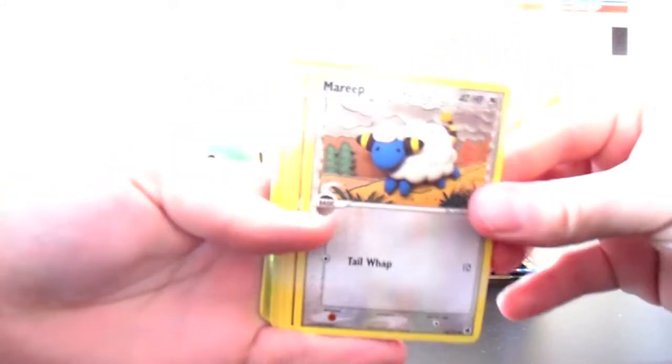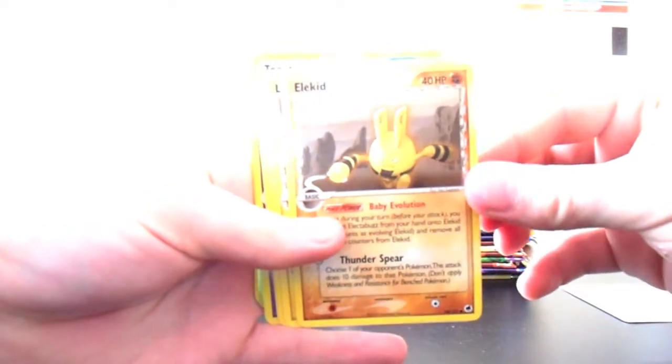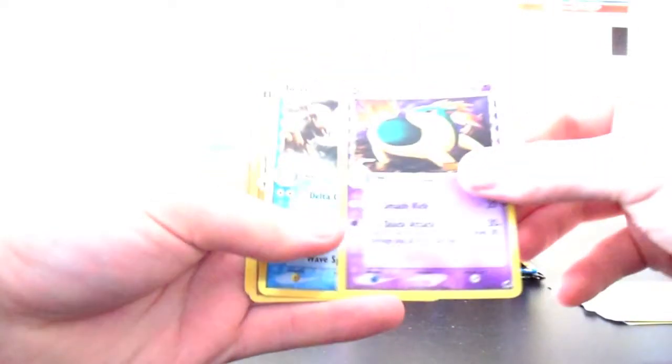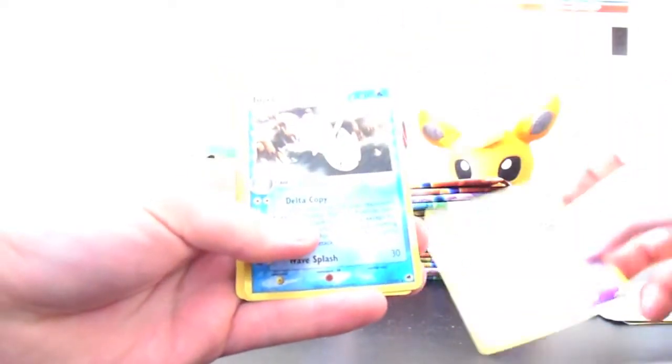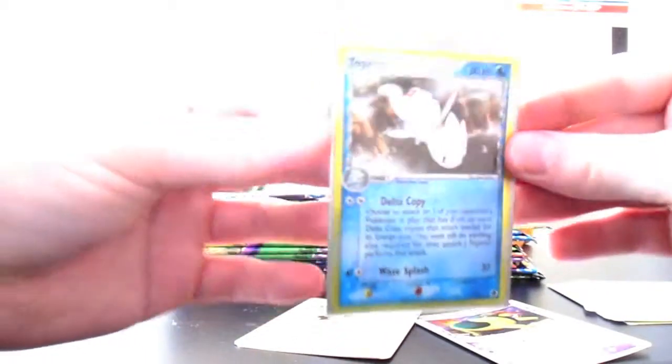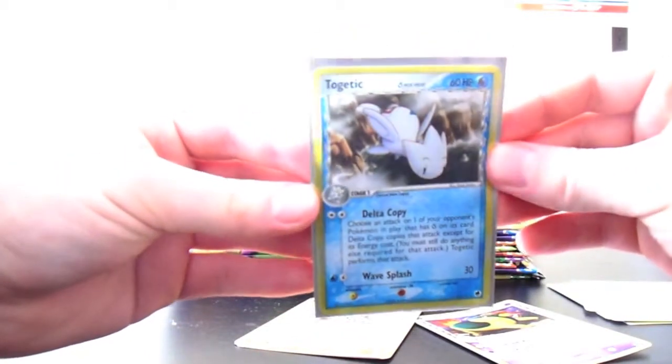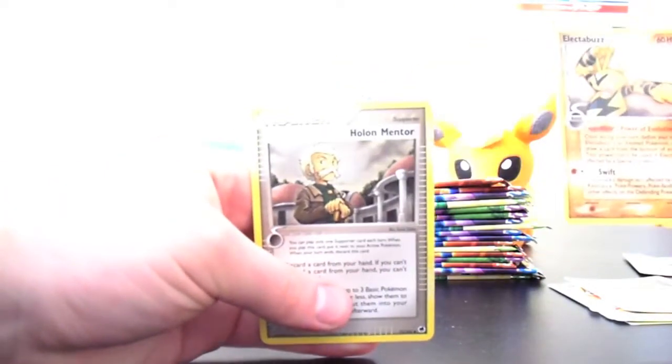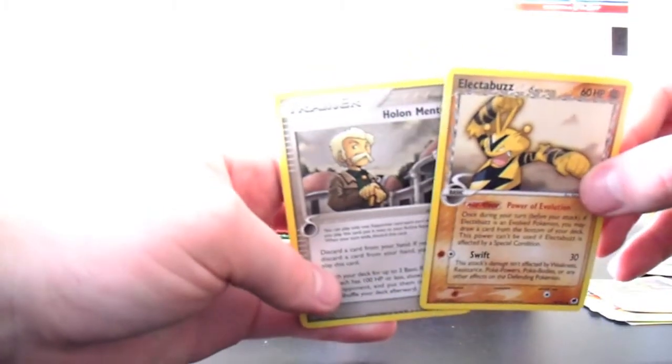But let's go. We've got Mareep Delta Species. There's going to be some Delta Species cards in here. Elekid Delta Species, Larvitar, Wooper, Smoochum, Quilava Reverse Rare. And off the bat, an awesome, awesome Togetic Holo. Let's sleeve that up. We've got the first holographic rare and it's Togetic. Very, very cool. Electabuzz and Holon Mentor are the Uncommons.